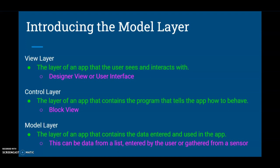What we're going to look at today is our third layer, which is our model layer, sometimes otherwise called your data layer. This data layer or model layer can contain the data entered and used in the app. This can be data from a list, it can be entered by a user, or it can even be data that has been gathered from a sensor.